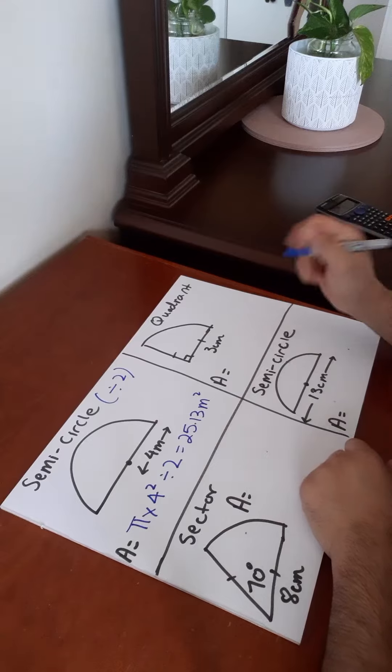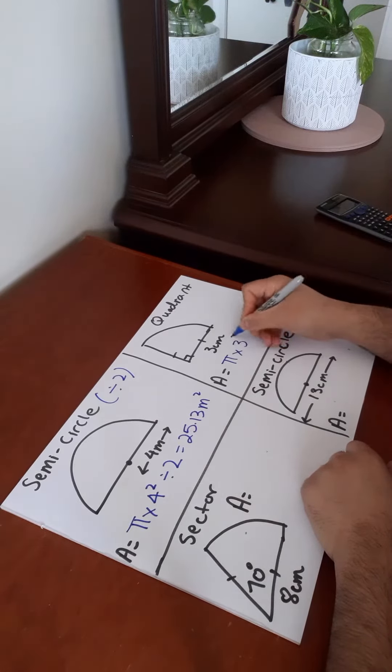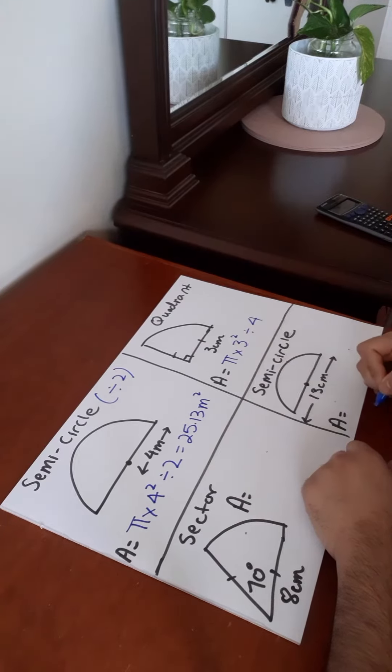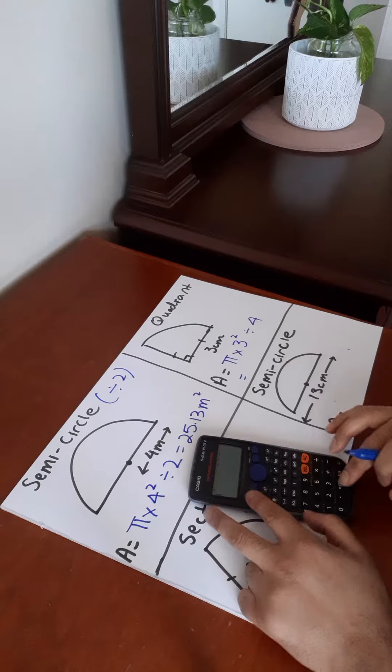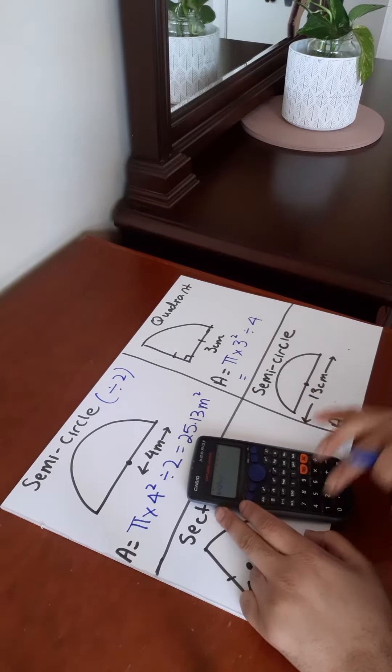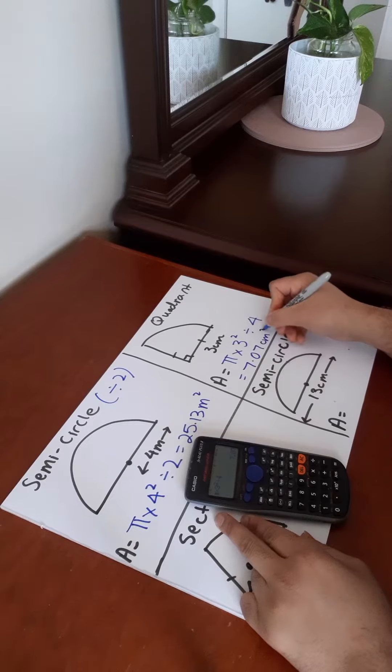Next one, a quadrant, a quarter of a circle. Same thing, pi times the radius is 3, 3 squared divided by 4 because there are four quarters and we only have one quarter. So we put that in and we get 7.07 centimeters squared.